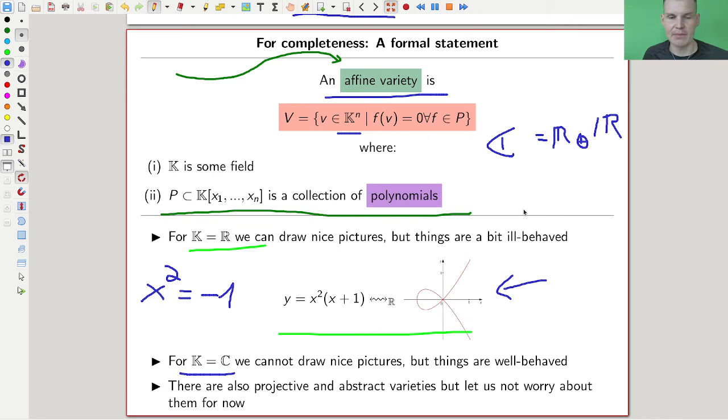There are also other forms of varieties, but we don't need to worry about them at the moment, like projective or abstract varieties. For now, studying these varieties is totally fine. This is essentially what people call classical algebraic geometry, the study of those varieties.